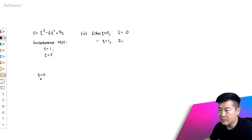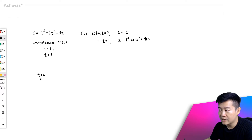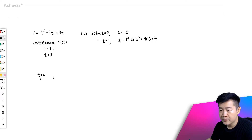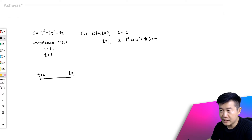So the displacement is going to be equal to 1 to the power of 3 minus 6 times 1 squared plus 9 times 1. And this is equal to 4. So from here, we will travel to here, and this is when t equals 1.